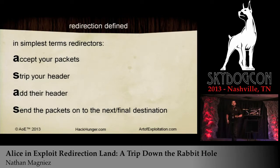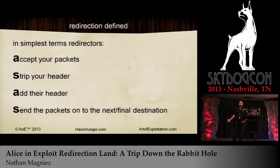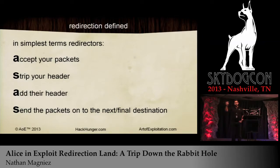In its simplest terms, a redirector does what I call ASAS: it accepts your packets, strips your header, adds their header, and then sends that packet on to its next hop or final destination. It takes your packet, strips off your header information, adds theirs — so on the target it looks like whoever was your proxy or your patsy is the one that actually did it.